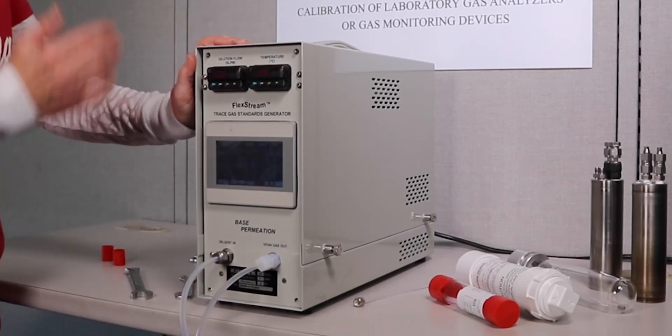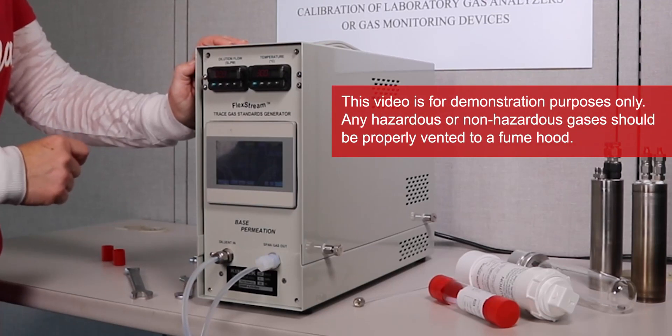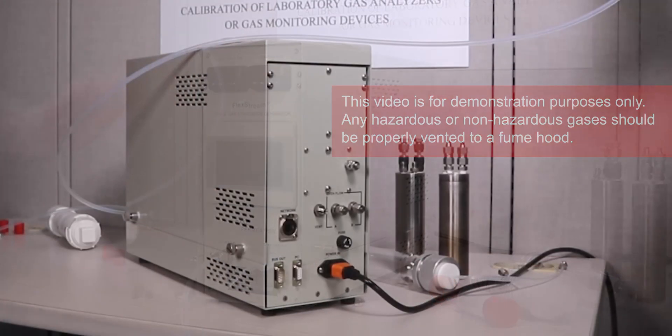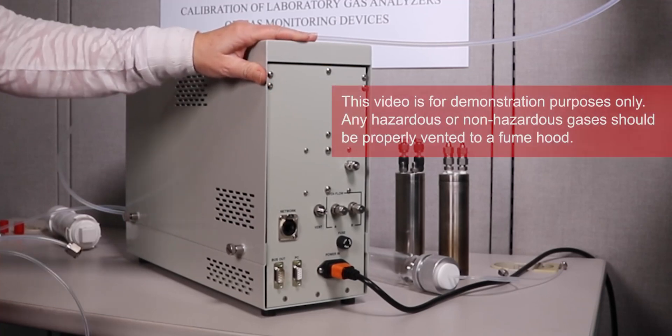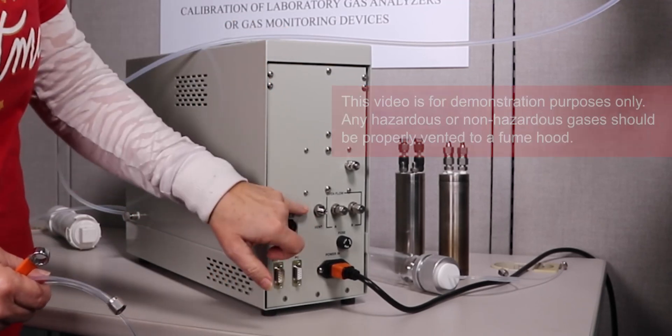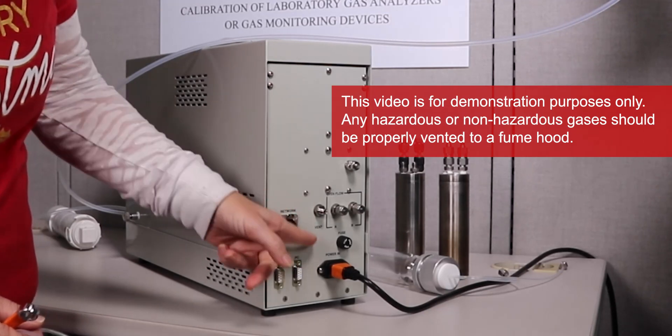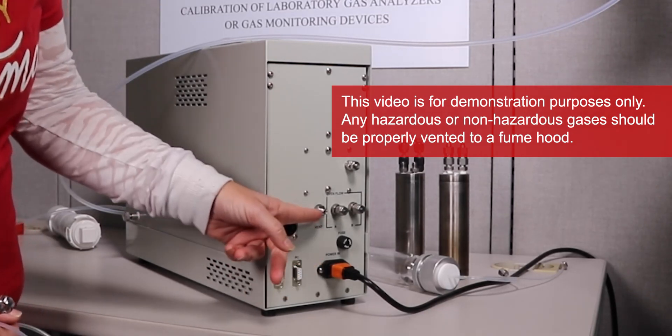I also have a vent line in the back that I want to connect that uses eighth inch tubing. Here we have the back of the FlexStream base module gas standard generator and as you can see we have a vent out port. It's an eighth inch fitting.